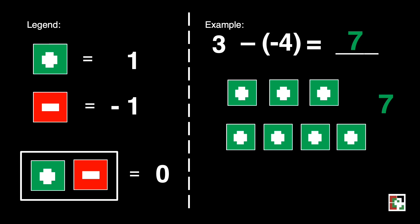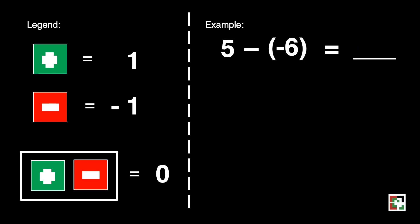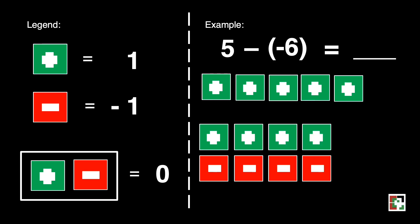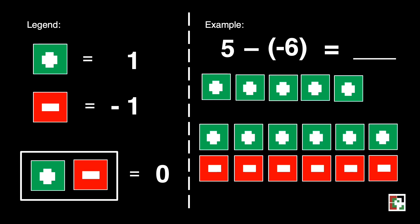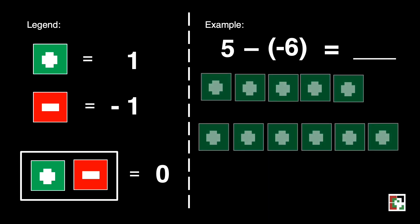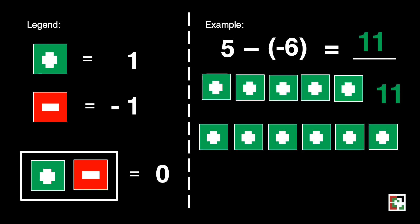Let's have another one. What if we have 5 minus negative 6? 5 is represented by 5 green squares, and our subtrahend is telling us how many zero pairs we'll use. Since we have 6, we'll be using 6 zero pairs: 1, 2, 3, 4, 5, and 6. Our subtrahend is negative, so we'll remove 6 red squares. The result is 11 green squares, or positive 11.